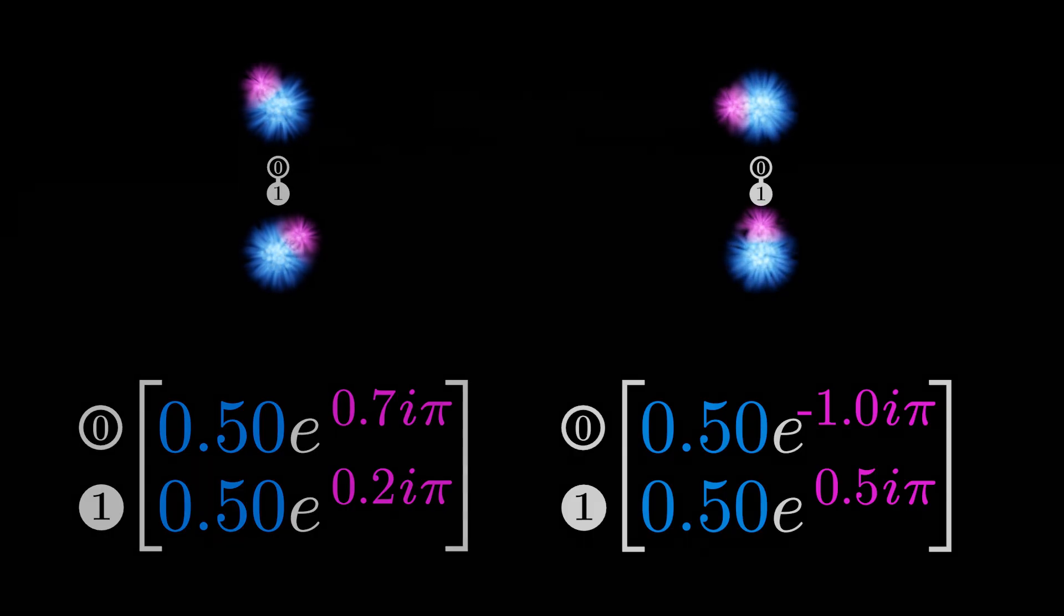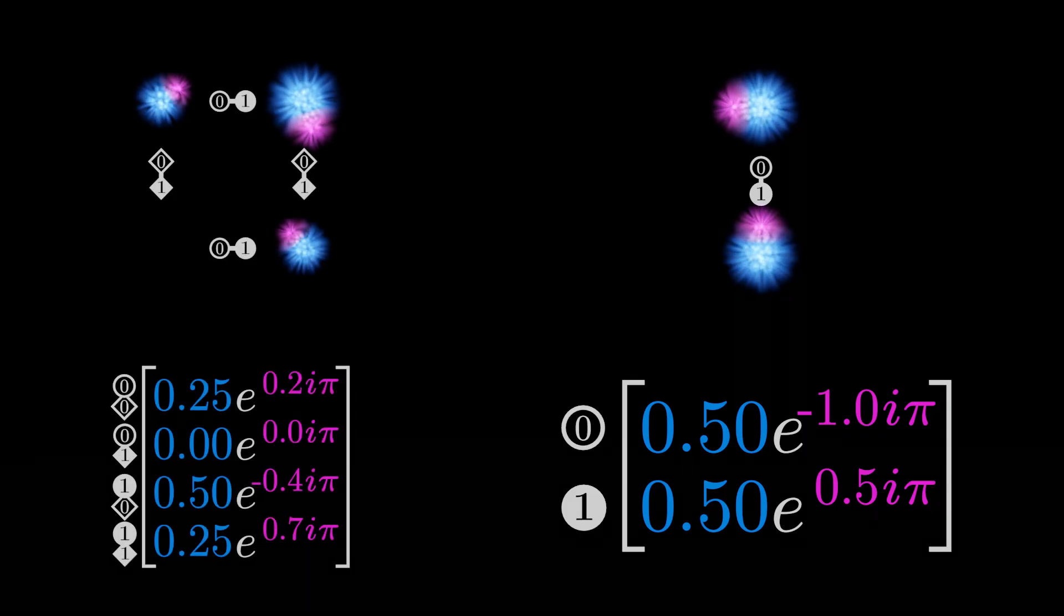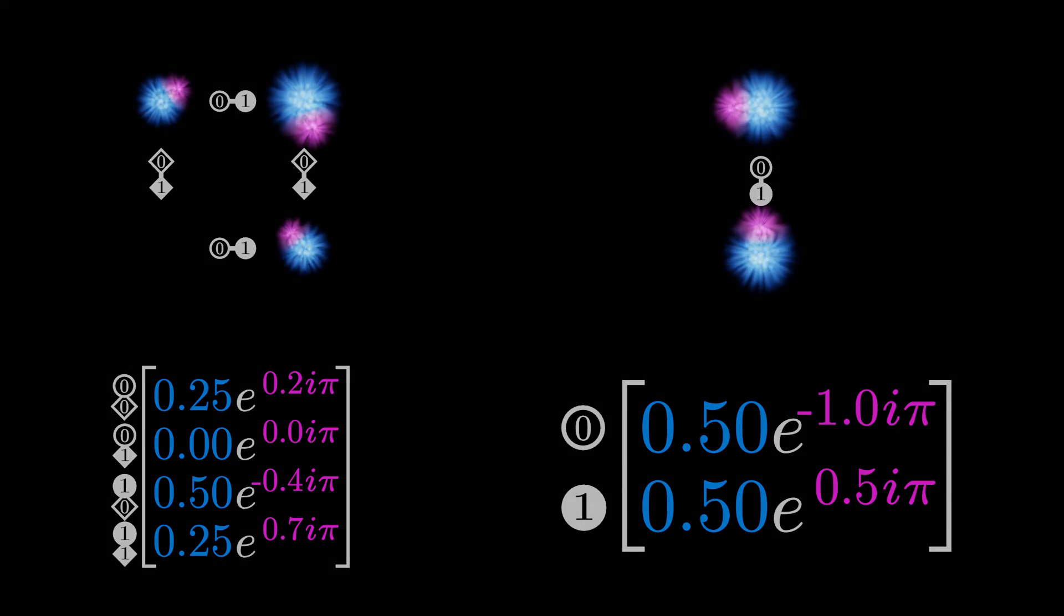So there we go. We now have a representation of a qubit that correctly accounts for all aspects of the Bloch sphere, while still being scalable to work with entanglement. Although, there's actually one more detail to sort out.